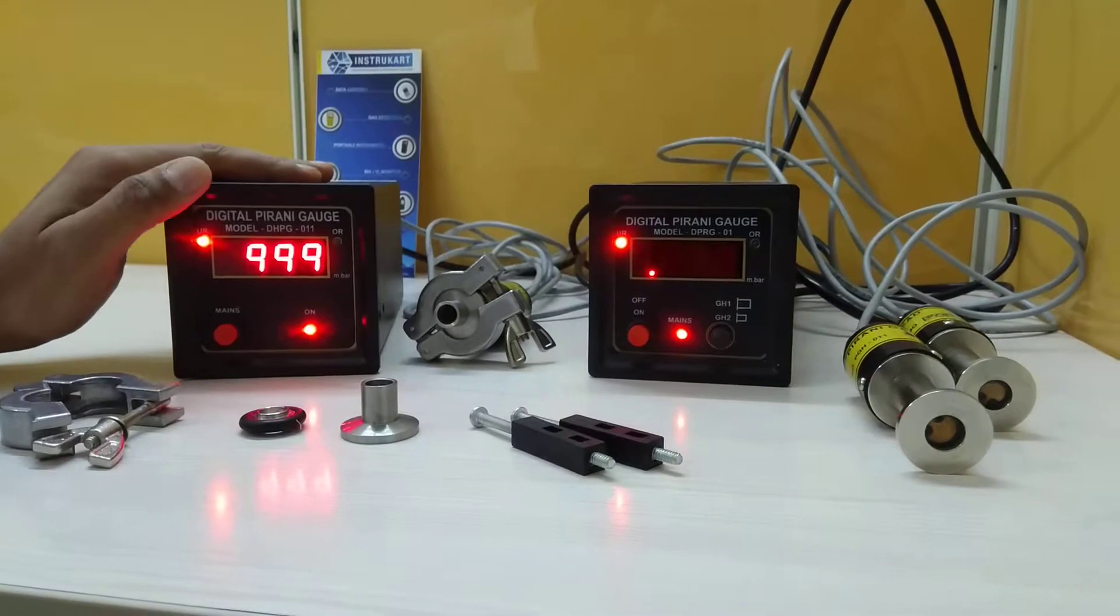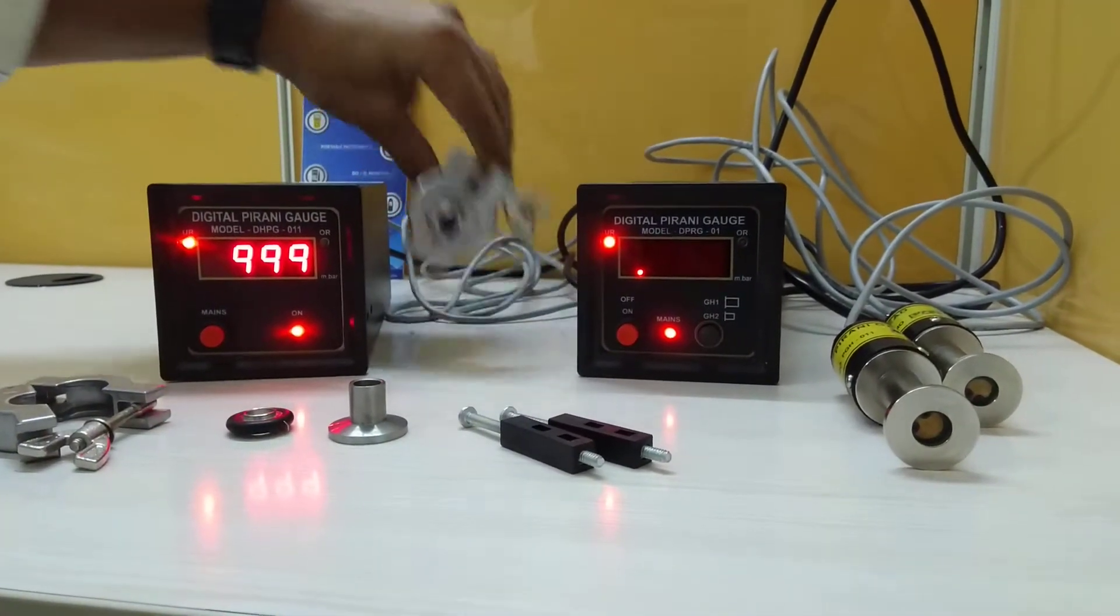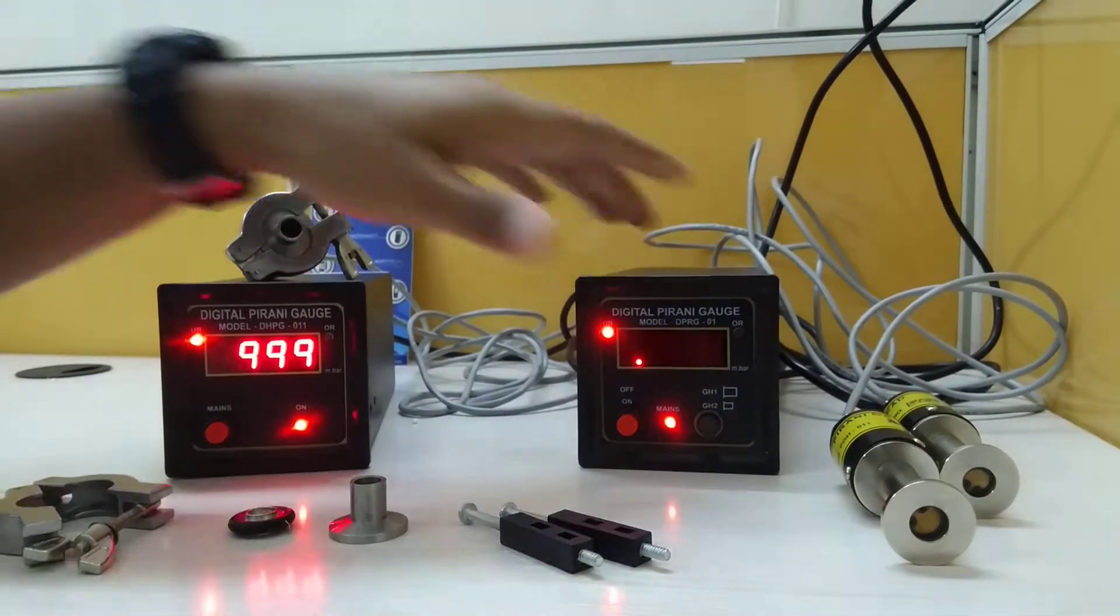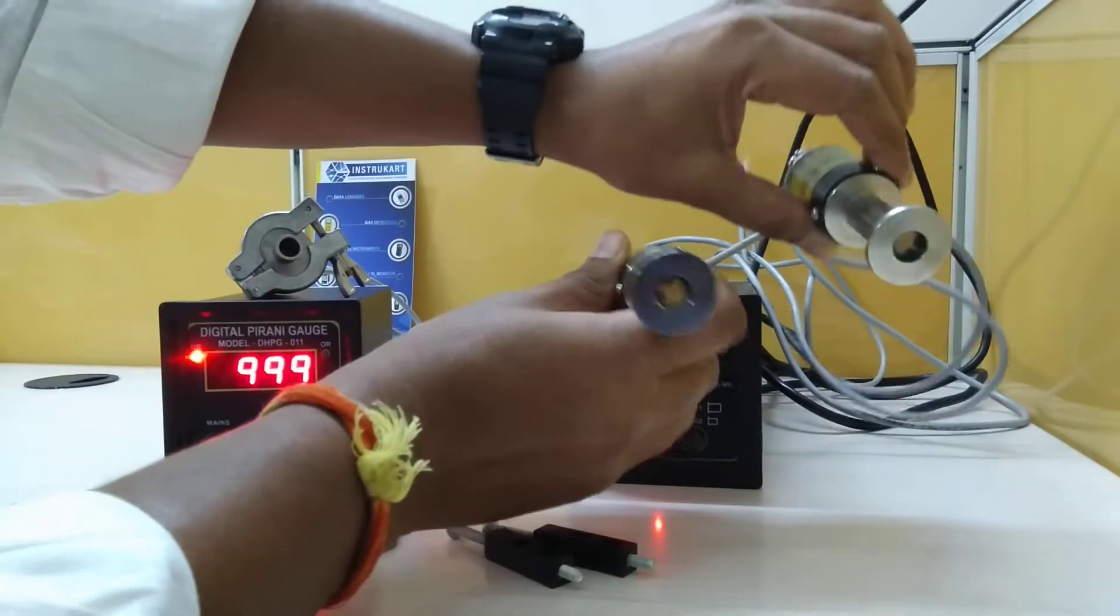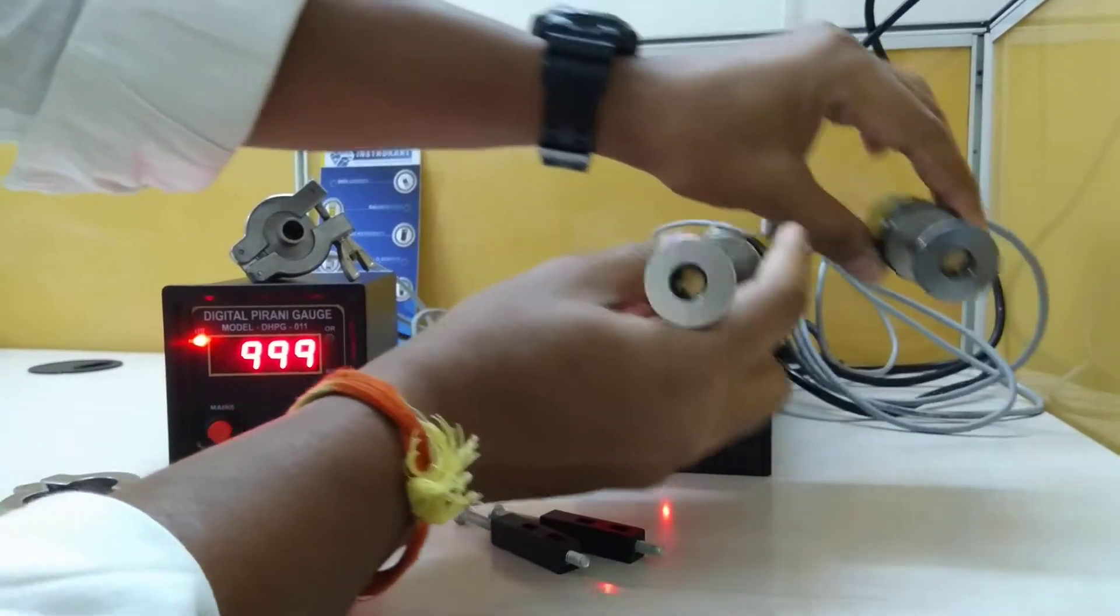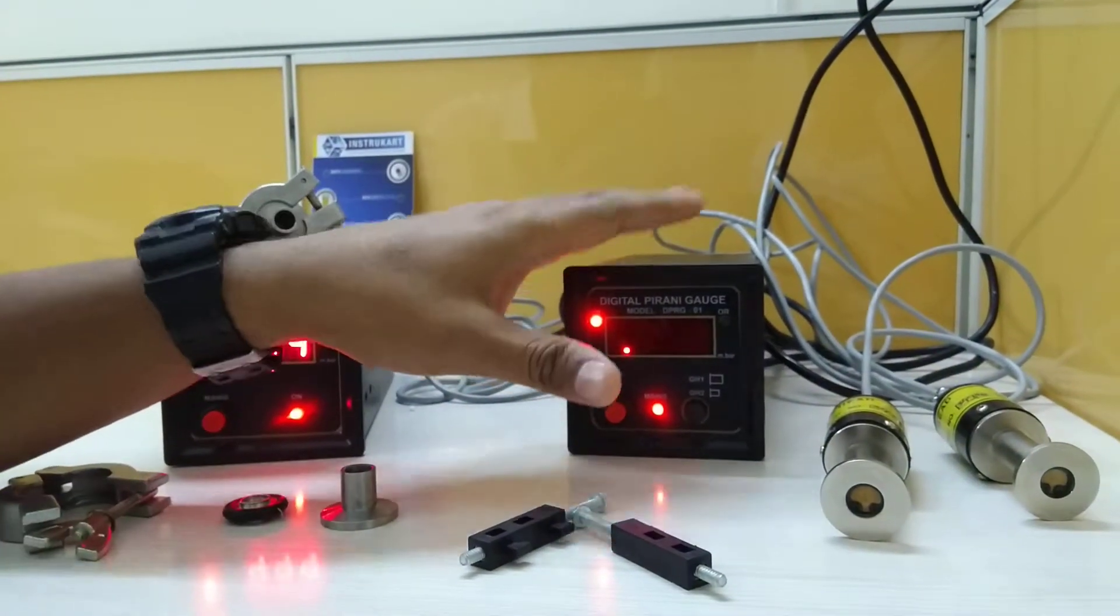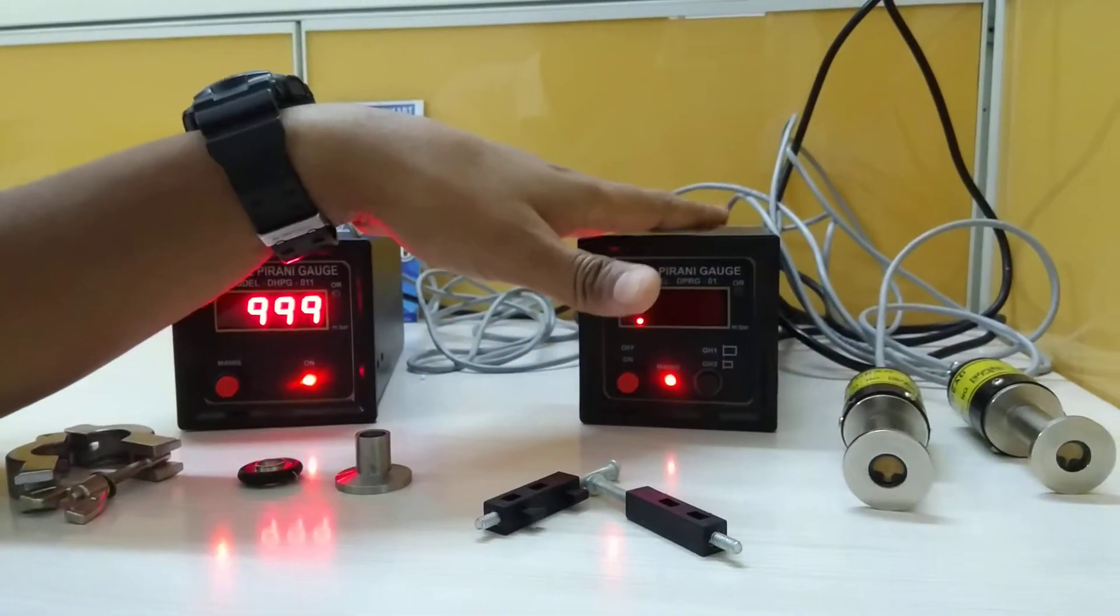The difference between these two is that we have one sensing point with this Pirani gauge, but this one has two gauge heads as you can see here. This is basically used to check two different inputs simultaneously.